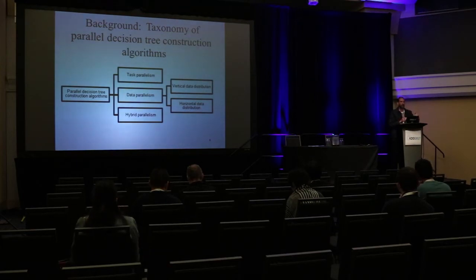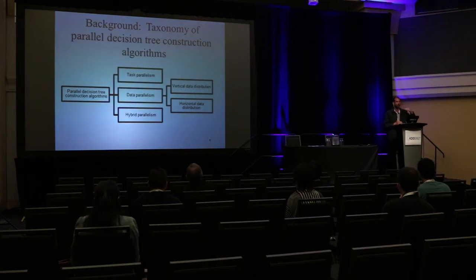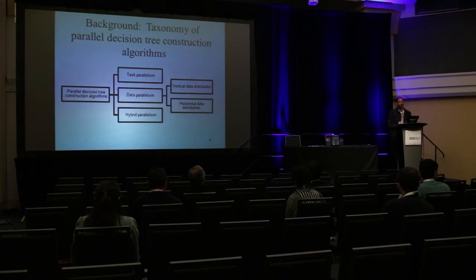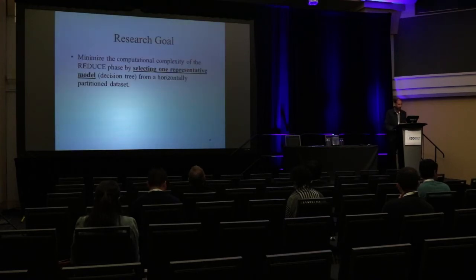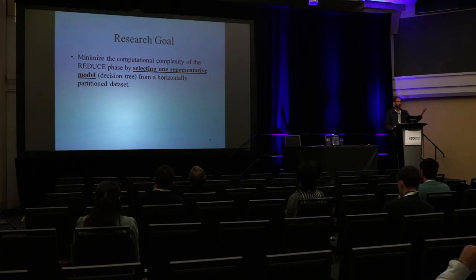The parallelism can be by task or data, and the data can be divided vertically or horizontally. Horizontal means dividing the data into records, while vertical means dividing by attributes. Our goal is to produce one model — one decision tree — from all the data that will represent the whole dataset.